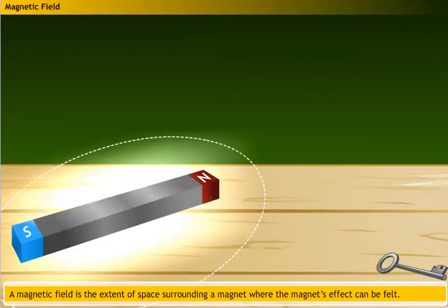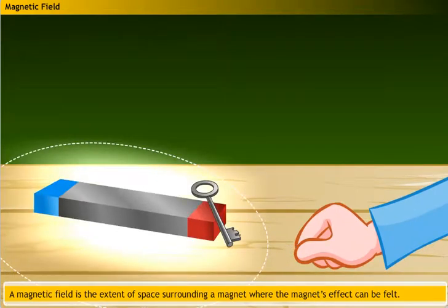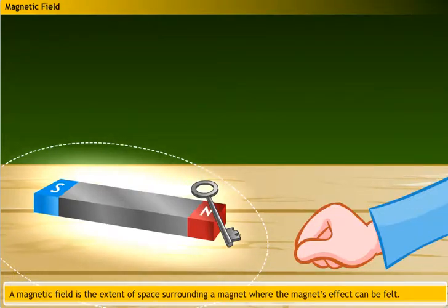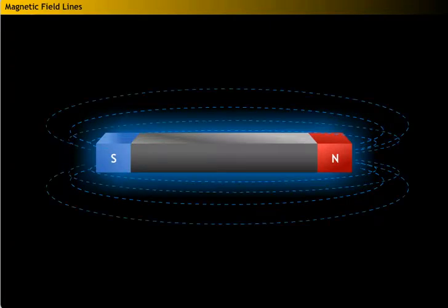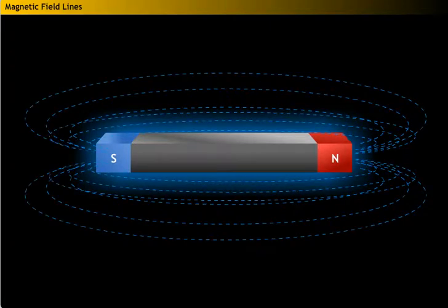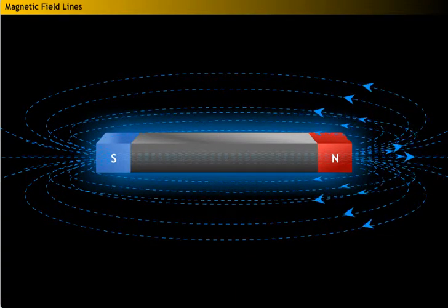A magnetic field is the extent of space surrounding a magnet where the magnet's effect can be felt. Thus, it represents the region under the influence of the magnet, just as an electric field represents the region of electric influence. A magnetic field consists of a number of magnetic field lines, generally referred to as magnetic lines of force.